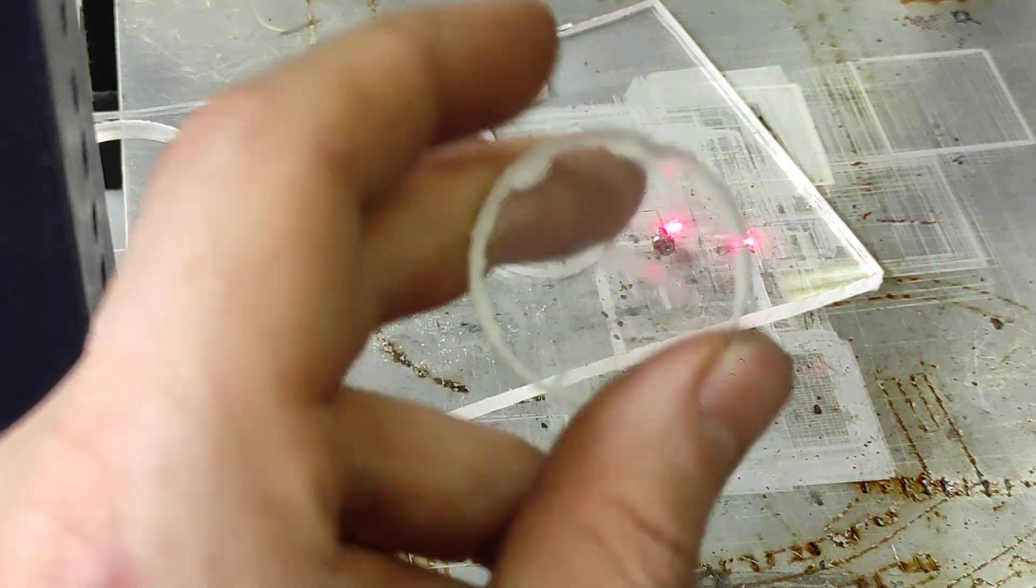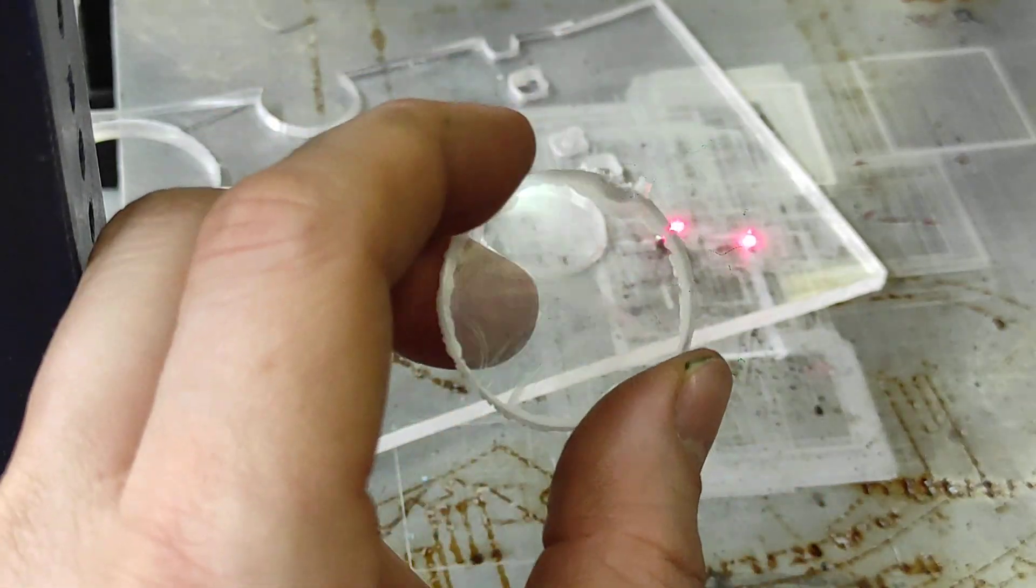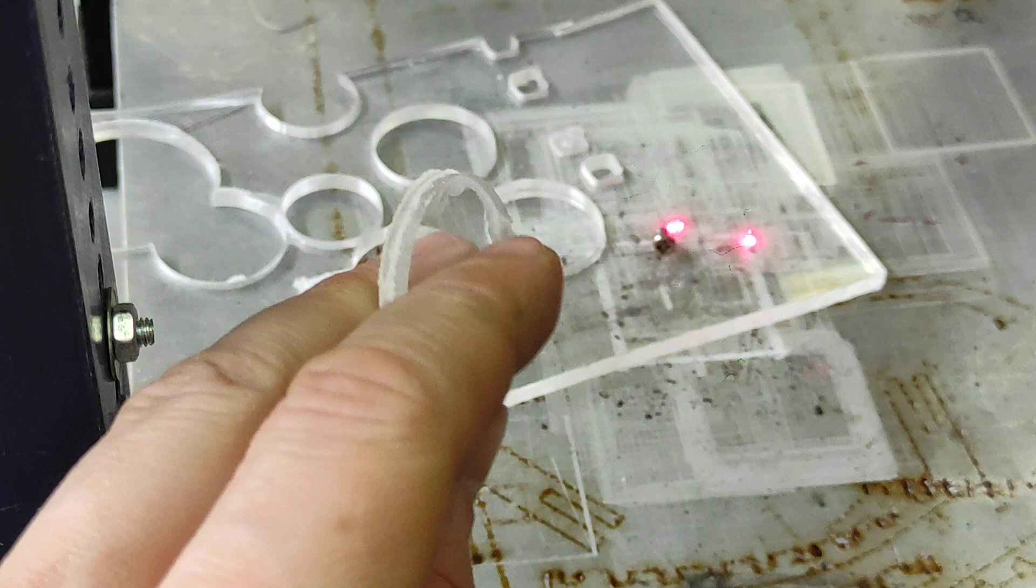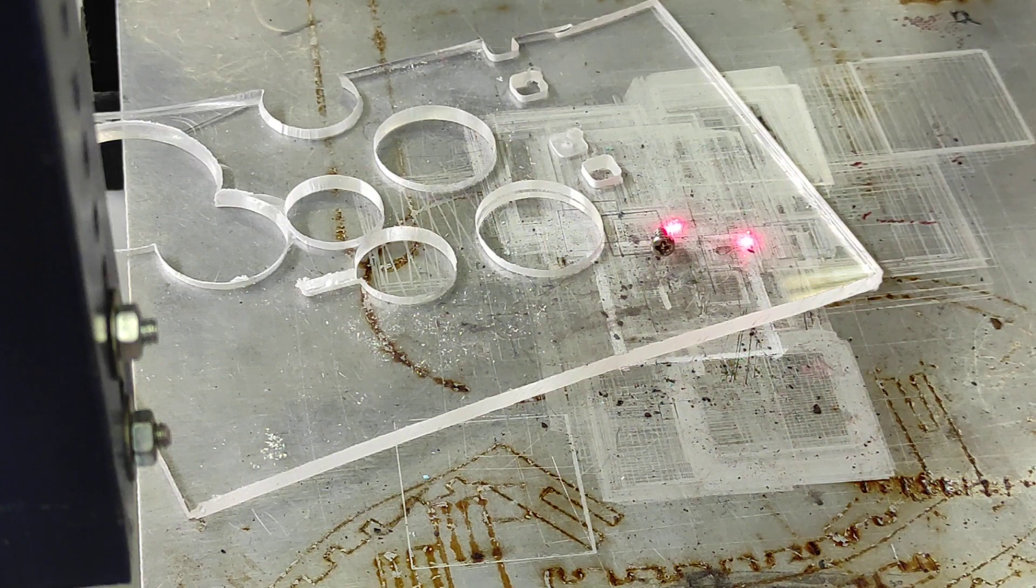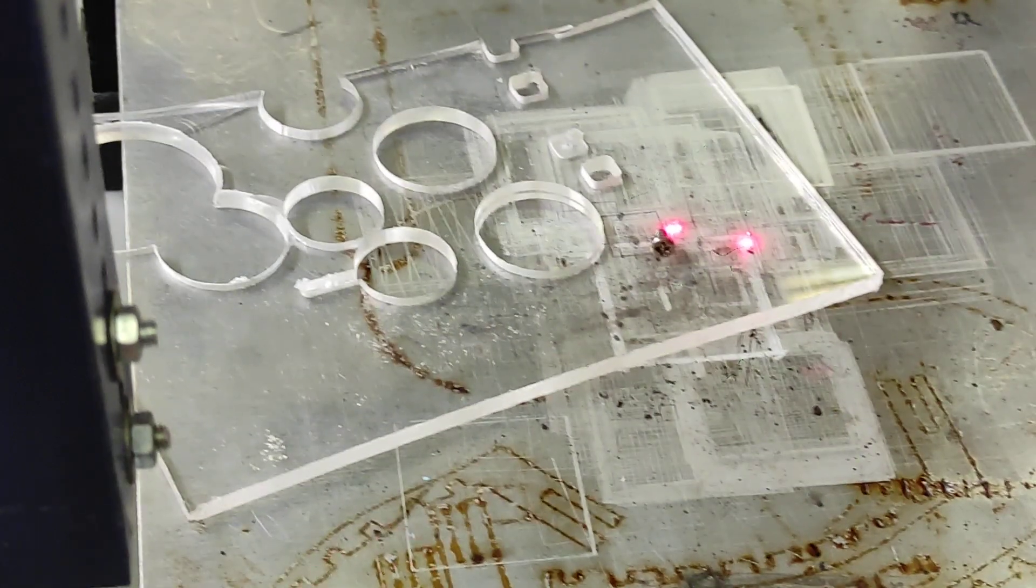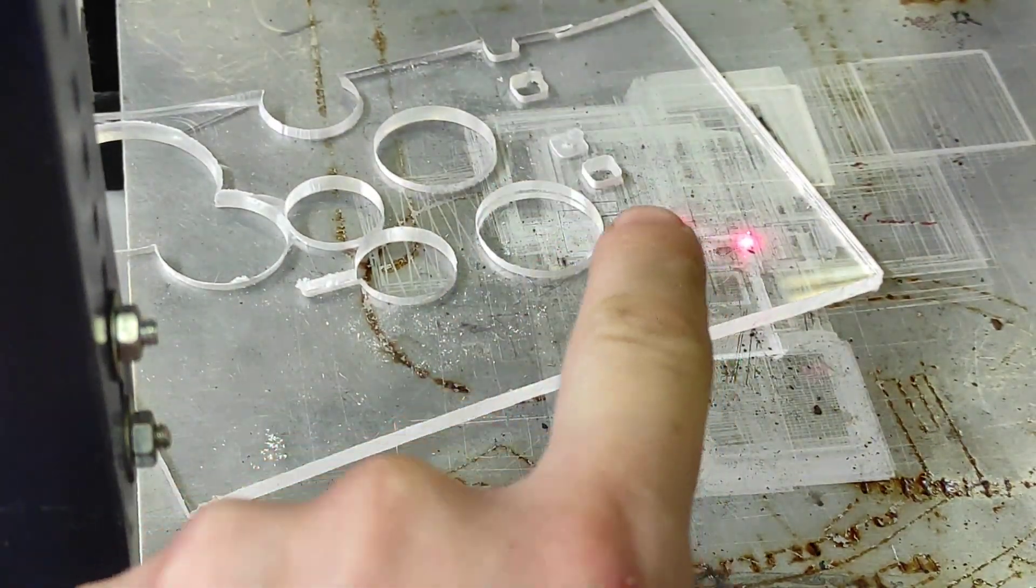Here we plan to weld two transparent acrylic parts. We have an acrylic plate and a small screw that I put over here.